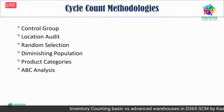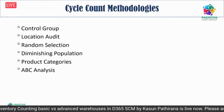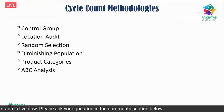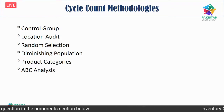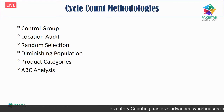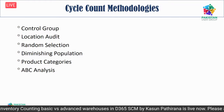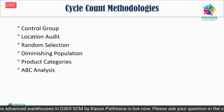Diminishing population is a versatile approach that can be used standalone or as part of the product category approach. It ensures all items in the population are counted at least once per cycle. Product category looks at the characteristics of your SKUs to group counting. ABC analysis is one of the more sophisticated methods — you've likely come across ABC classification in D365, and it can also be used in cycle counting methodologies.